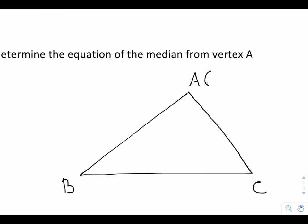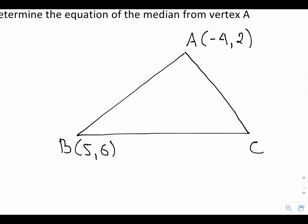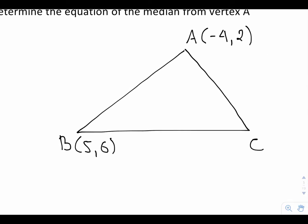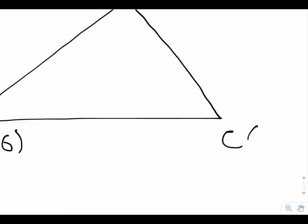The coordinates are negative 4, 2 for A, for B it's 5, 6. And I know that if this were in a plane, my picture would be completely different, but it does not matter because all I'm concerned about are the properties of this triangle. And for C, I have 1 and negative 4.